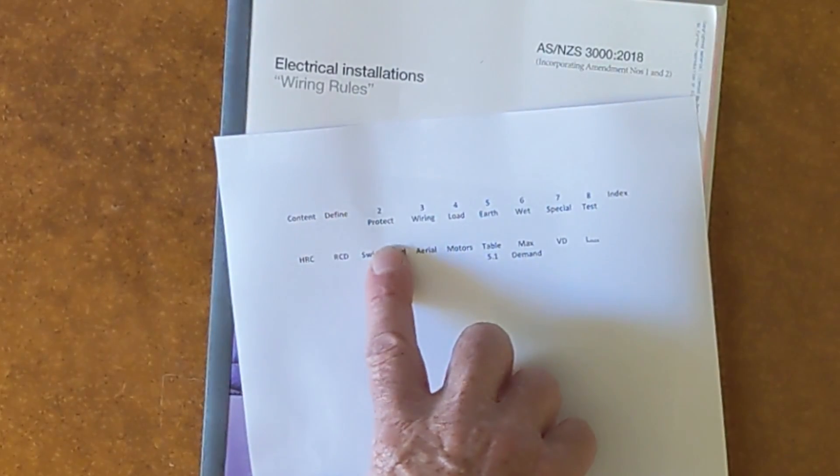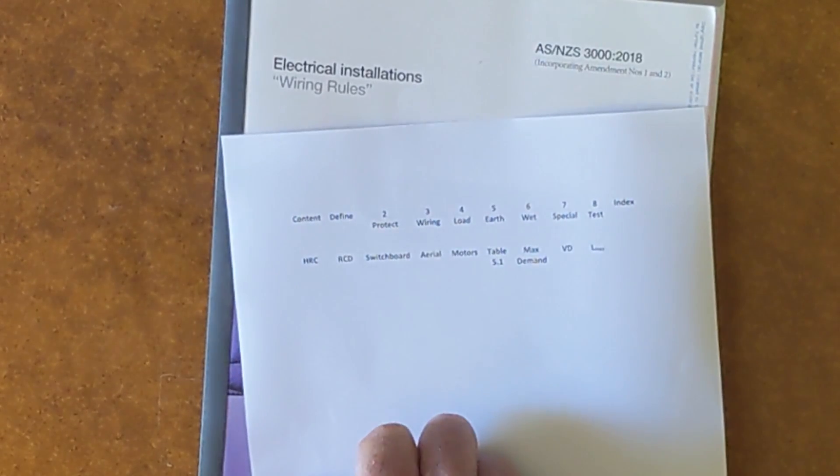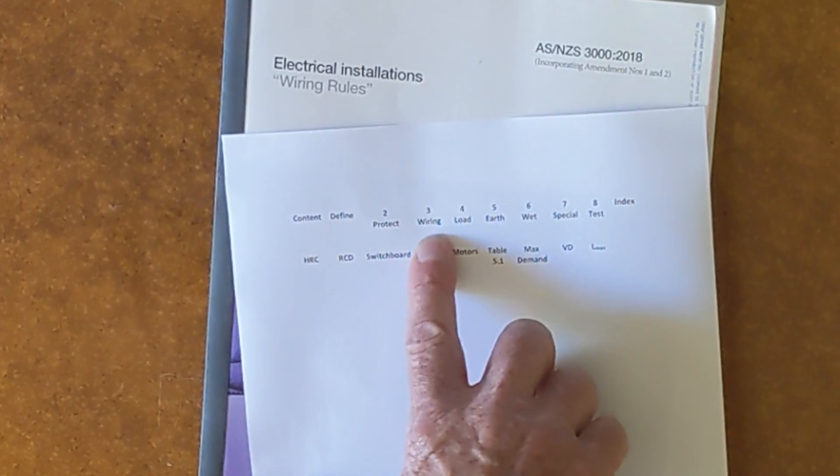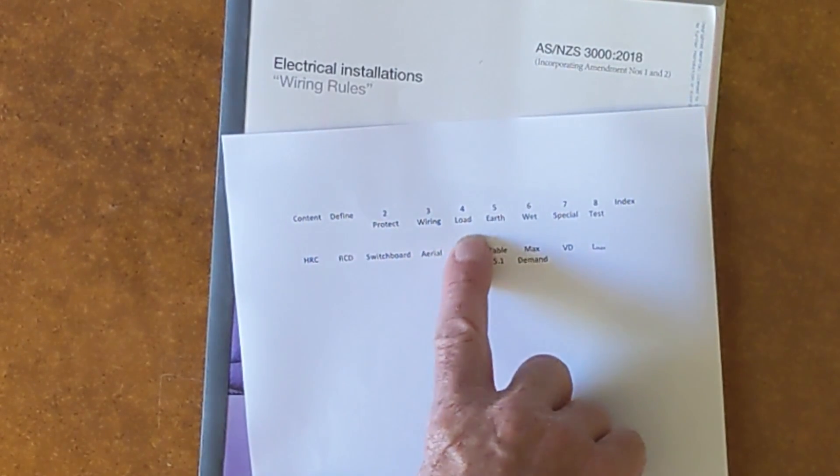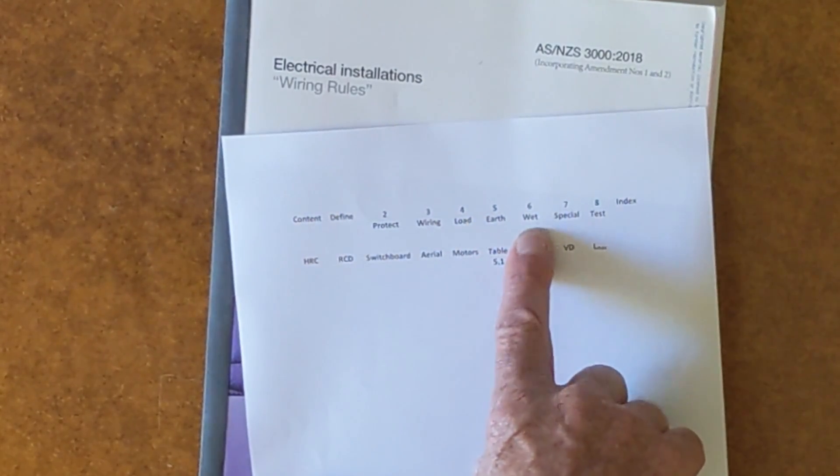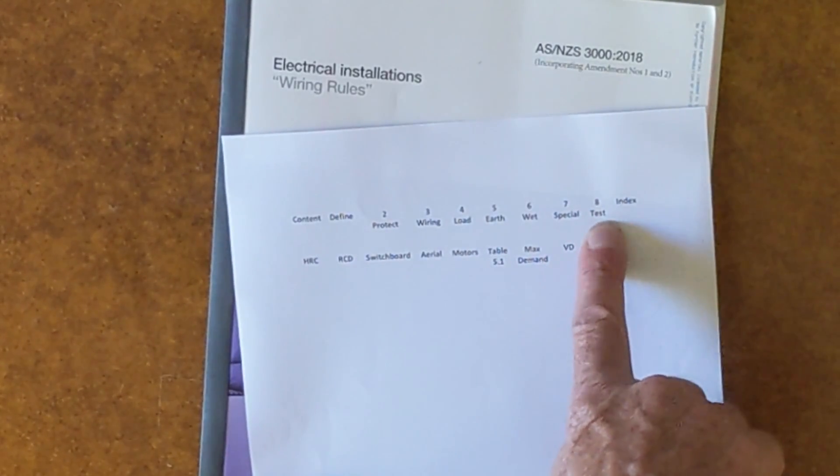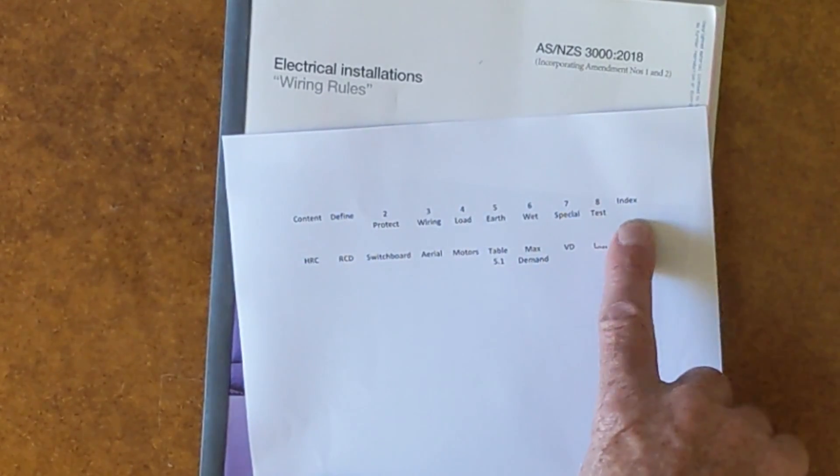Section one is already highlighted. Section two is protection. So all I'm going to do is put two and protect. Section three was wiring. Section four was loads. Section five is earth. Section six is wet areas. Section seven, special. Section eight, testing. And then we've got the index at the end.